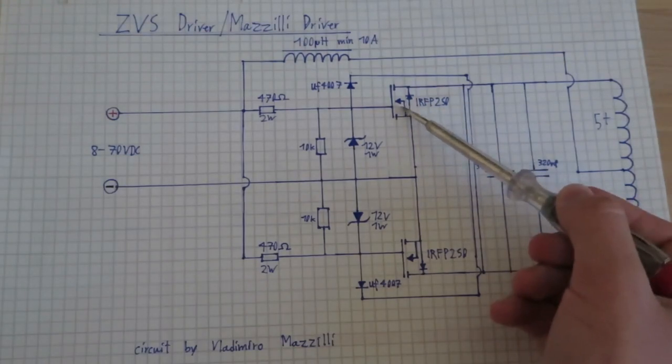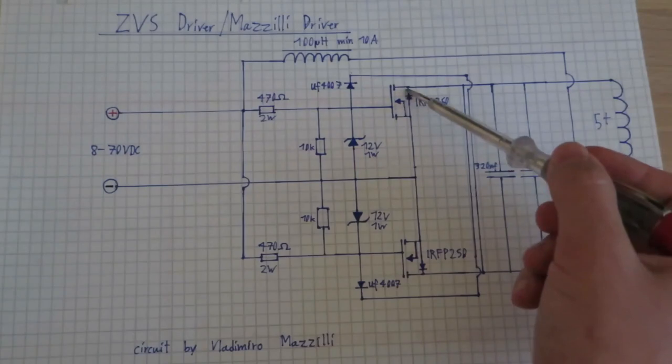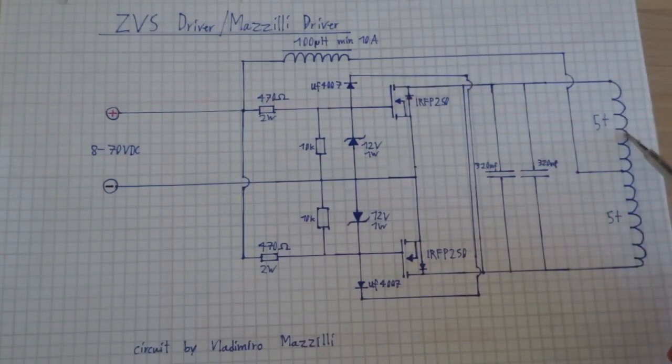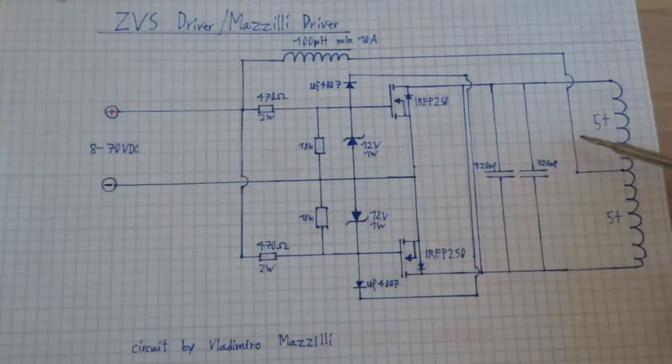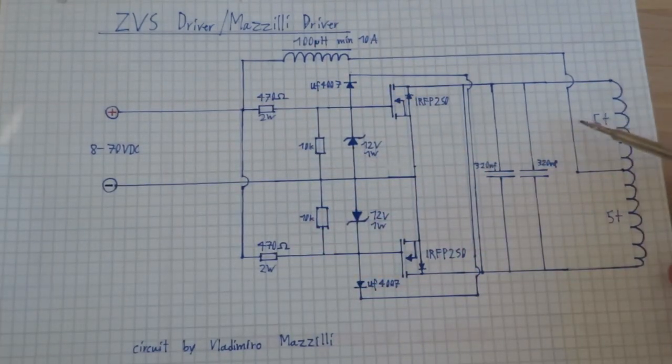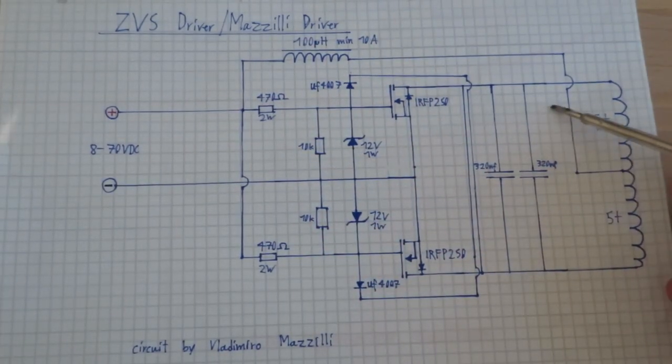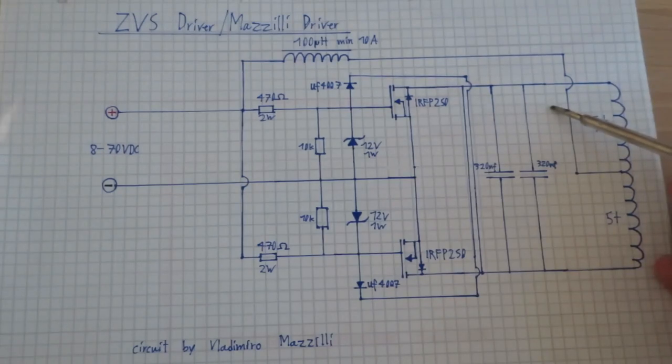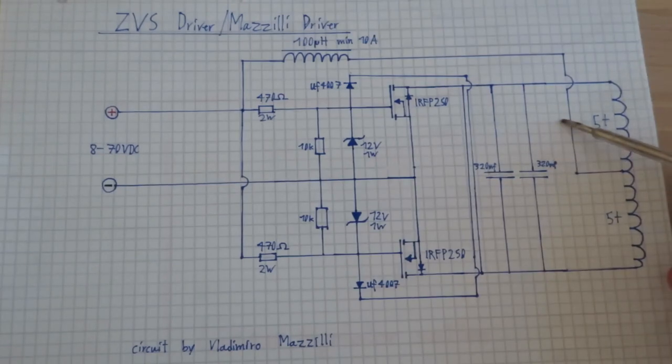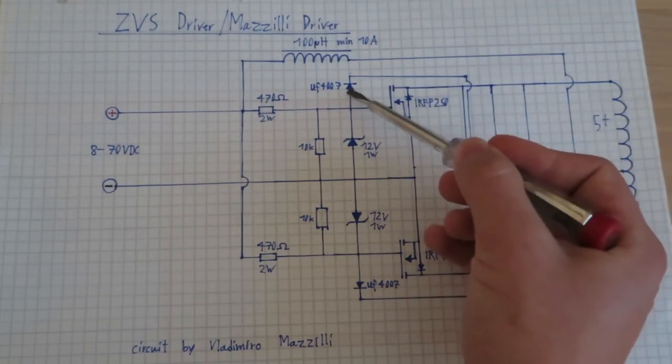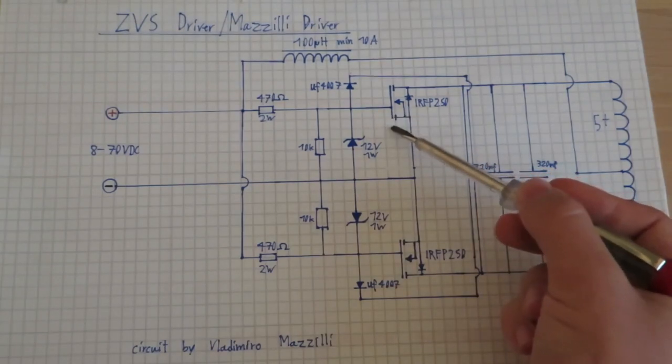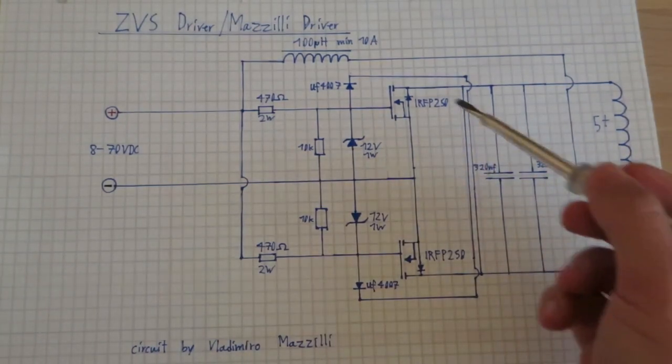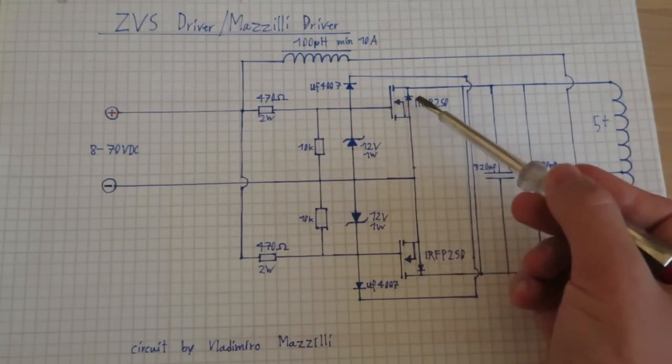So what's going to happen now is that there will be a current flow through the transistor and this part of the primary coil back to the positive. And like that the voltage on this coil is going to rise, but at some point it has reached its peak and then it's going to go down again. And on its way down this diode right here discharges the gate of this transistor, and as soon as the zero crossing hits, this transistor should be completely off.